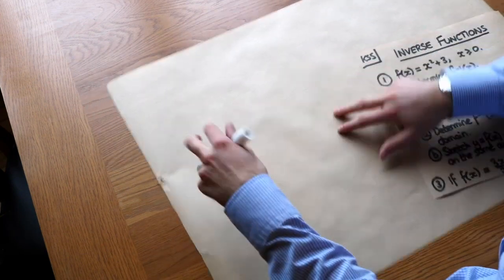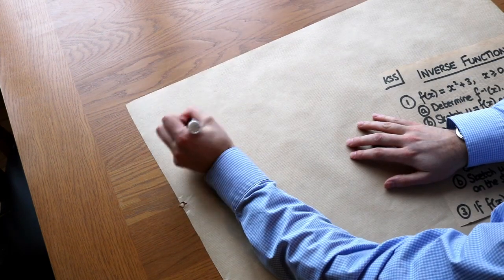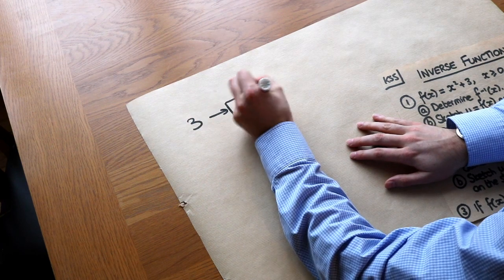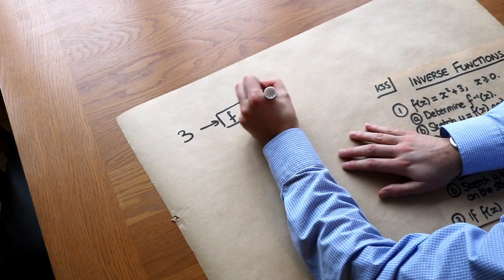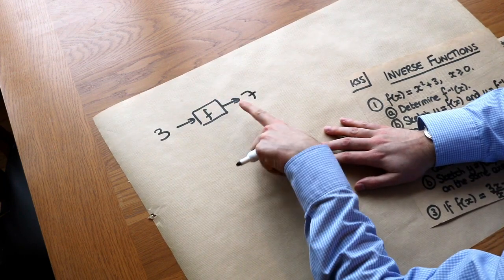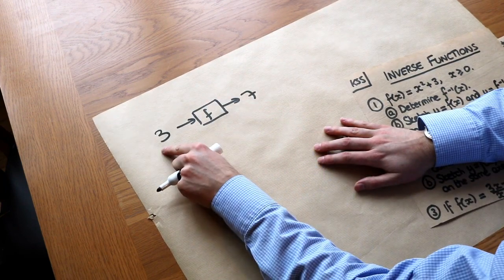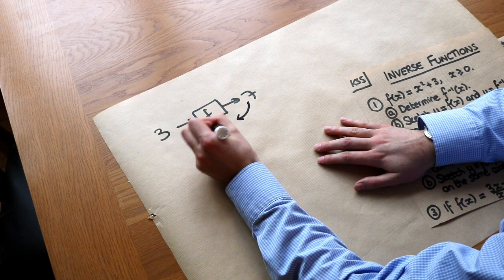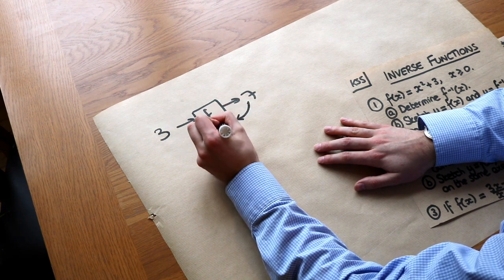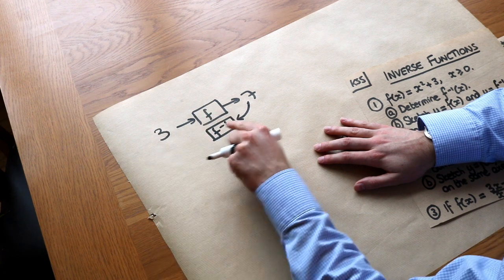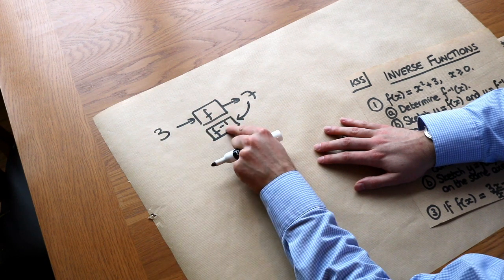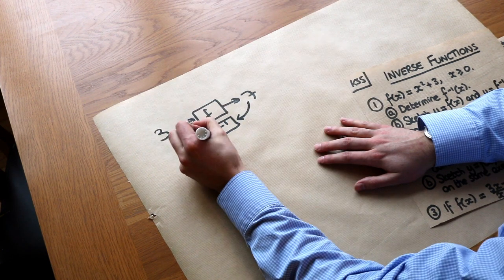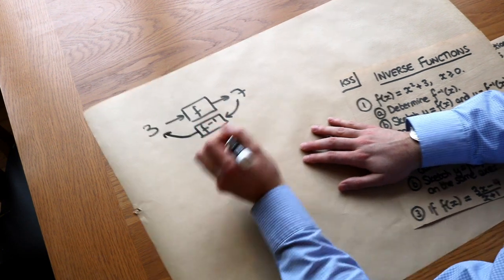So this is what an inverse function is. If I had an input of 3 and a function f, like a number machine, that gave you an output of 7, then the inverse function would allow us to get back from the 7 to the 3. If we input that 7 into the inverse function, written as f to the minus 1, it's not actually a power of minus 1 — it means we're applying the function minus 1 times, i.e. once backwards — that would get us back to the 3.